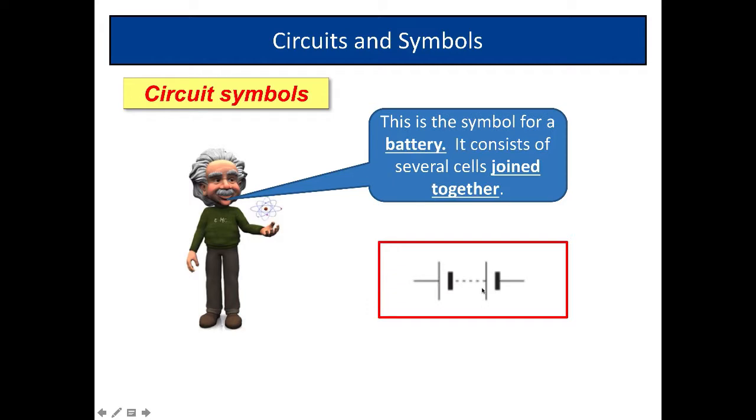Now a battery is when you join cells together. So this is the symbol for a battery. Here we've got two cells joined together. You might have three cells or four cells joined together. Cells joined together make up what we call a battery.